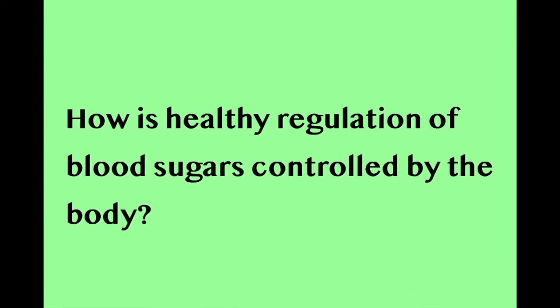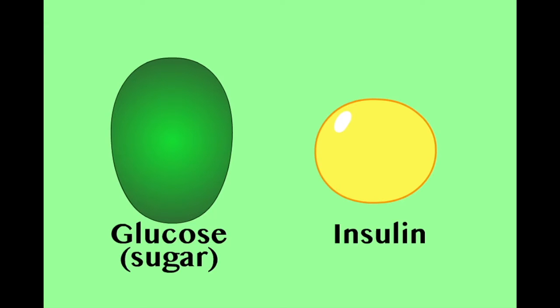In order to understand how glucose control goes wrong, we must first understand how healthy regulation is conducted. This means understanding the relationship between glucose and the hormone insulin.